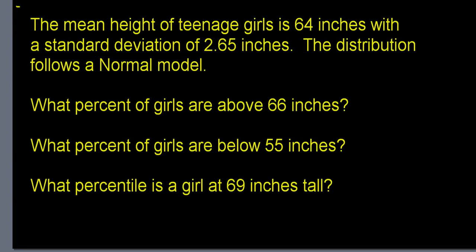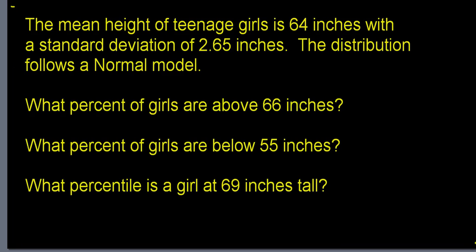Let's jump into some problems. The mean height of teenage girls is 64 inches with a standard deviation of 2.65 inches, and the distribution follows a normal model, so we're free to use all normal model calculations. The normal model is universal across many scenarios — to use it, you need Z-scores. A Z-score tells you how many standard deviations you are above or below the mean.